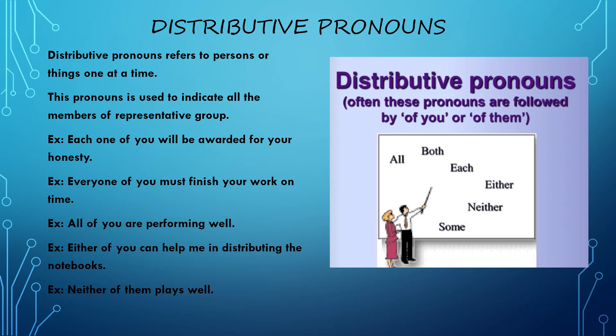Next is distributive pronoun. The word distributive itself means to distribute something. So distributive pronouns refer to persons or things one at a time. This pronoun is used to indicate all the members of a representative group. Distributive pronouns are often followed by of you or of them — for example, both of you, each of you, either of you. You is used if singular and them if plural.